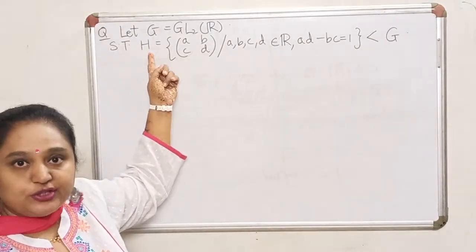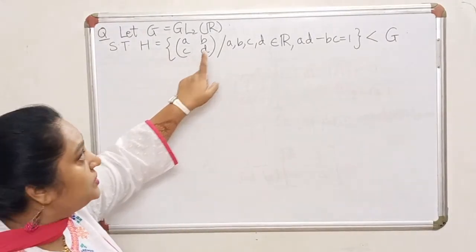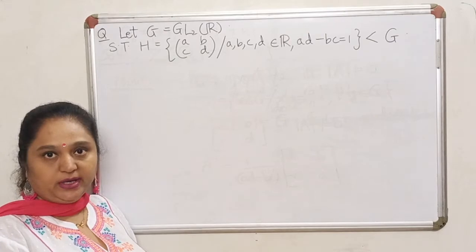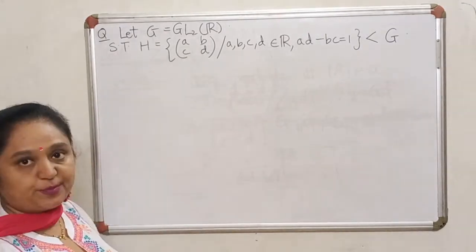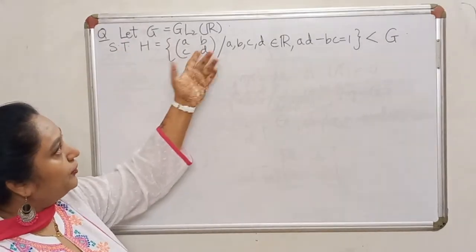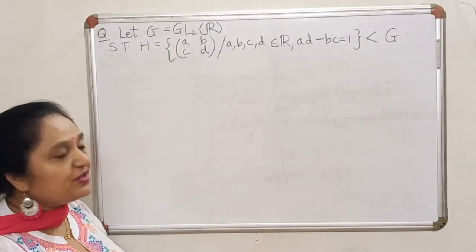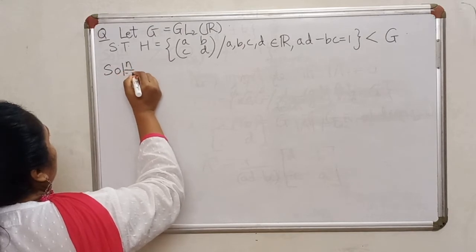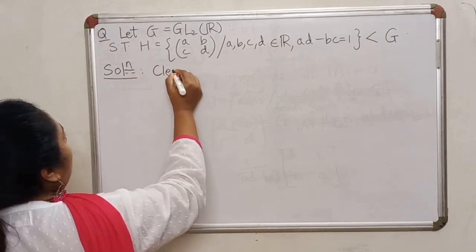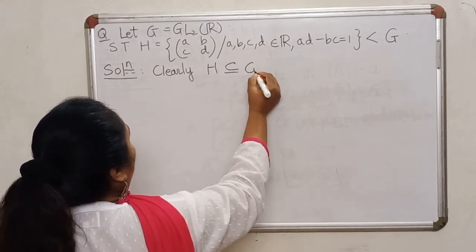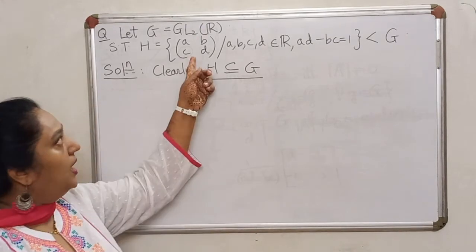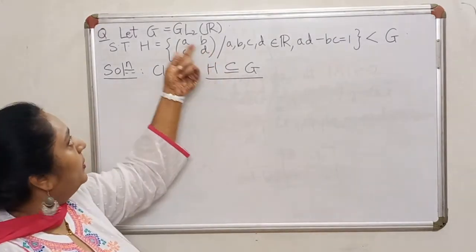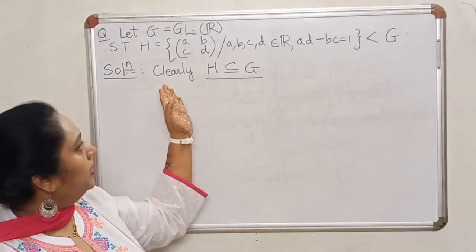I specifically take H to be the set of all 2×2 matrices whose determinant is equal to 1. So in G we have 2×2 matrices whose determinant is non-zero, and H is those 2×2 matrices whose determinant is specifically equal to 1. It is clear that H is a subset of G, because if the determinant is 1, it is naturally not 0, so every element of H is going to be in G.